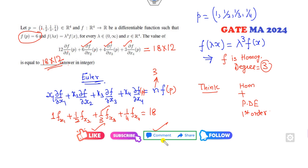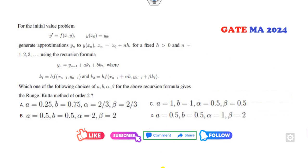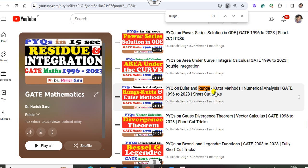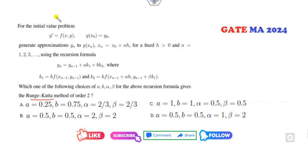Look at this next one — the Runge-Kutta method. A very simple approach: if you remember my Runge-Kutta lecture, you can solve this type of question within 10 seconds. The shortcut trick is that alpha and beta must be the same.